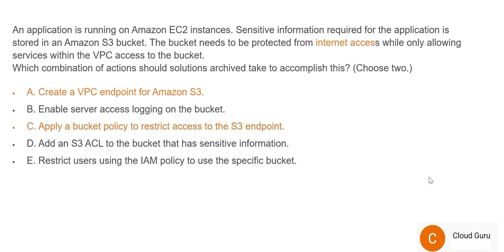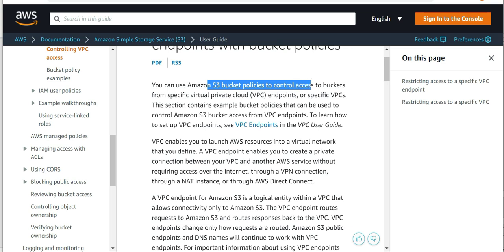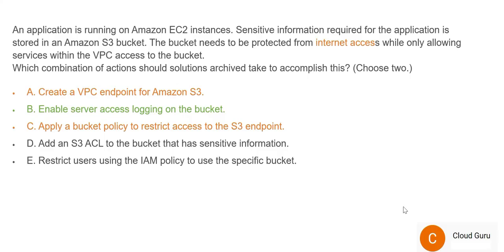You should also apply a bucket policy to restrict access through the S3 endpoint only. That's why options A and C look correct. You can use S3 bucket policies to control access to buckets from specific VPC endpoints — this is what answers the question. Enabling server access logging on the bucket will not work — it's only used to understand what has happened after the fact. After a hack happens, it will tell you what occurred — that's a log, a post-mortem. It will not prevent internet access. So option B is wrong.